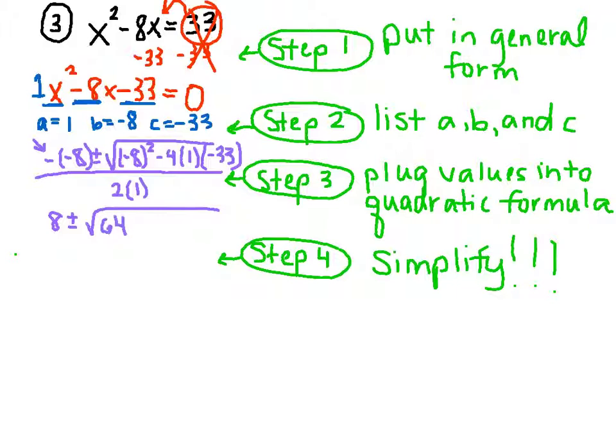And then negative 4 times negative 33 is 132. And that's a negative times a negative, so that becomes positive. So plus 132, and that's all divided by 2, because 2 times 1 is 2. Simplifying again, we still have 8 plus or minus the square root. 64 plus 132 is 196, and that's divided by 2.